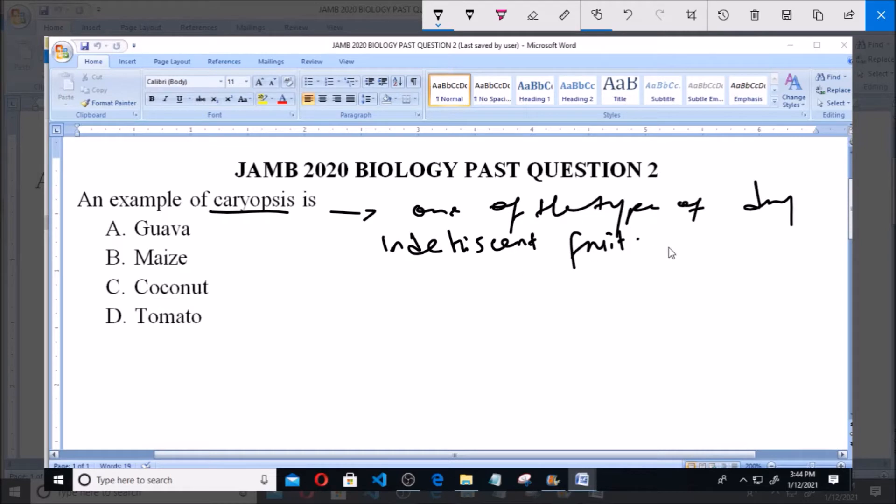Now, caryopsis is one of it. It's a typical example of dry indehiscent fruit, just like you have the achene. The achene is also an example of dry indehiscent fruit. Now, these caryopsis are different from achene in the sense that the pericarp and seed coat of caryopsis are fused together.